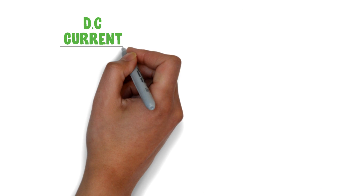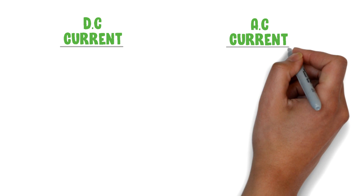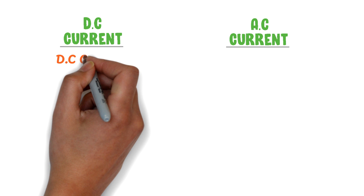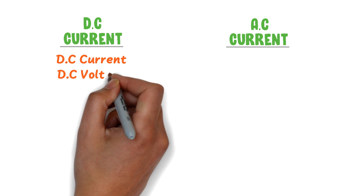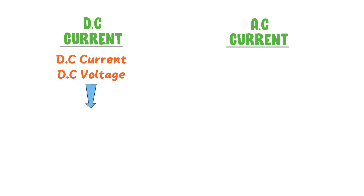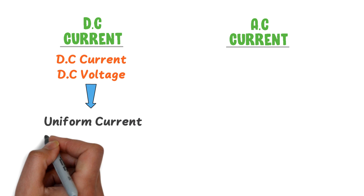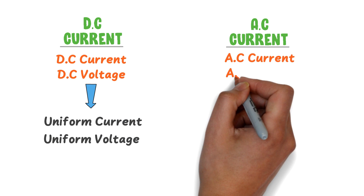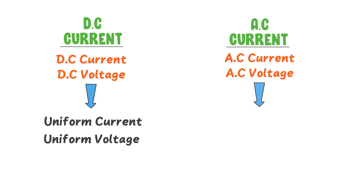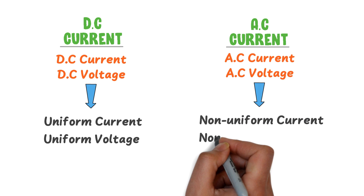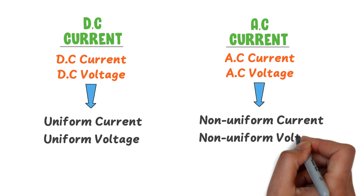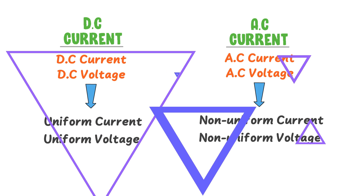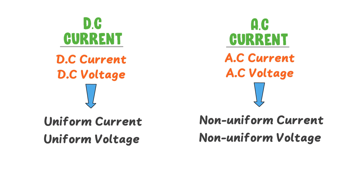If I summarize DC and AC current in one statement: DC current or DC voltage is uniform or forward current and voltage, while AC current or AC voltage is non-uniform, moving in both forward and backward directions. Remember these important statements about DC and AC current.